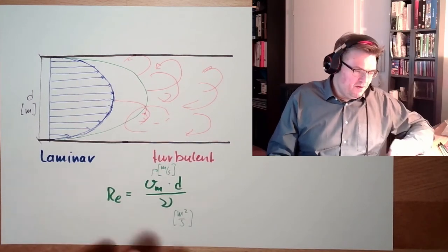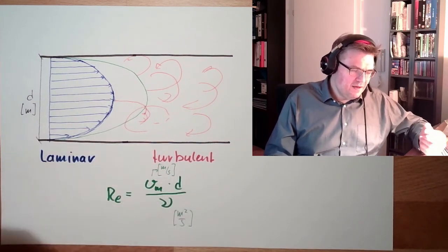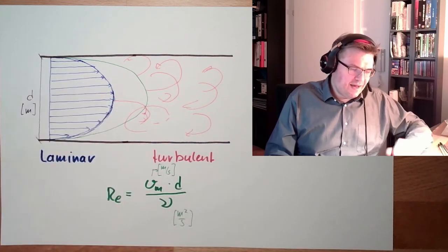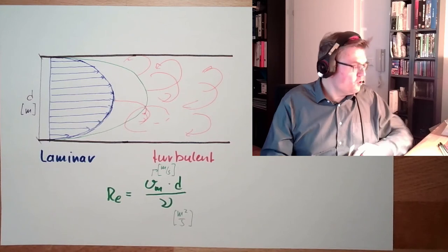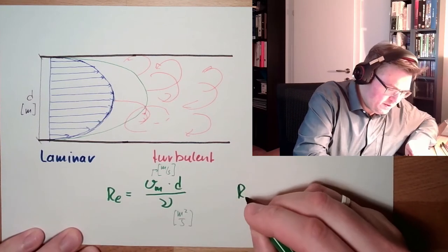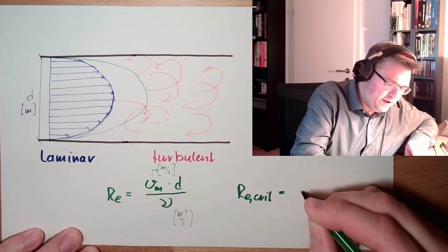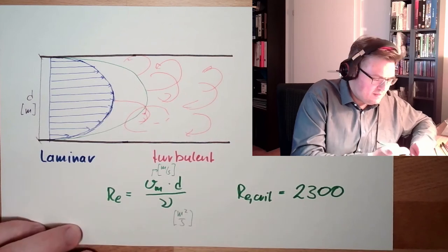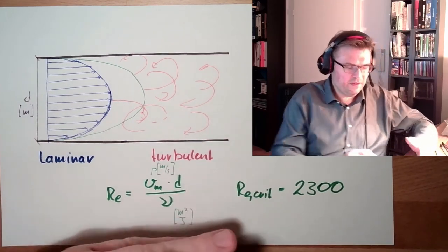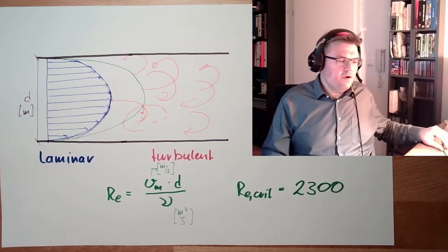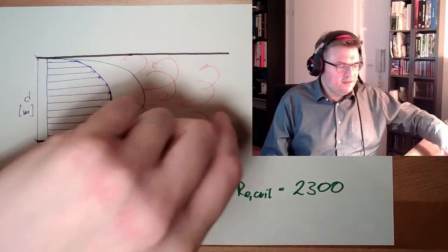So, this is the Reynolds number. This gives us a little bit idea, what is inside there. And now, there's the critical Reynolds number. Re crit. This is all called crit. And this is around 2300. If this number, you calculate here, is reaching 2300, you have a very good chance that this is turbulent.